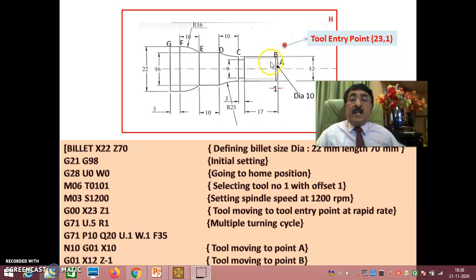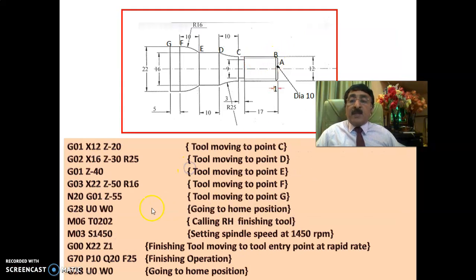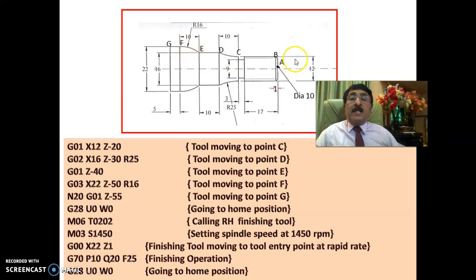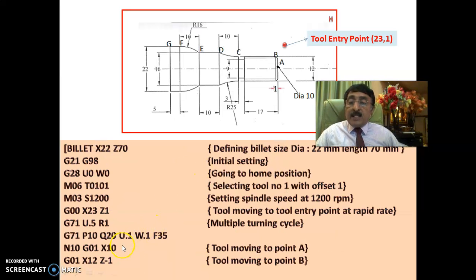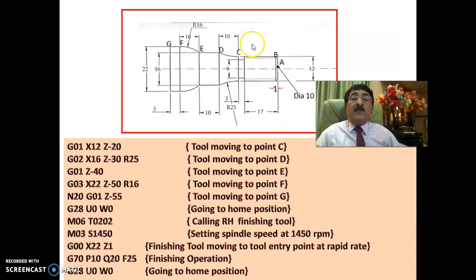After G71 is over — at N20, G01, Z minus 55 — when it comes to point G, rough turning is complete. That means it would have left an allowance of 0.1 as given by U0.1, W0.1: 0.1 on X and 0.1 on Z. So a diameter of 12 will be 12.2, and if it is 20 it will be 19.9. That 0.1 will be removed during finishing.